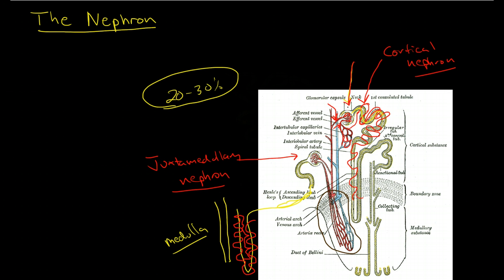And this filtrate winds its way through the proximal tubule, and down into the loop of Henle, and back up through the distal convoluted tubule, and into the collecting duct.